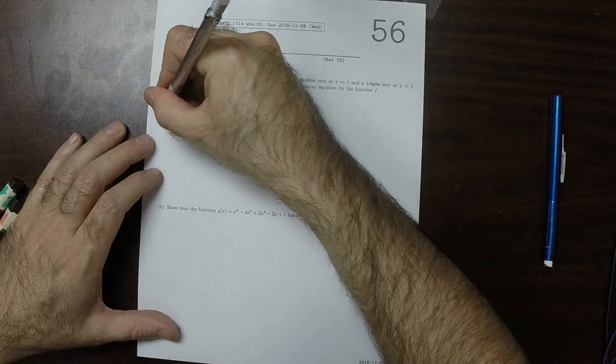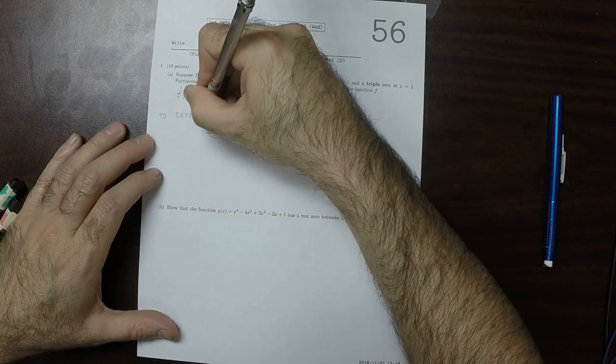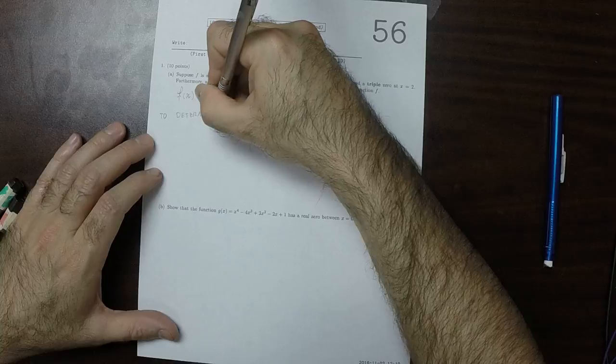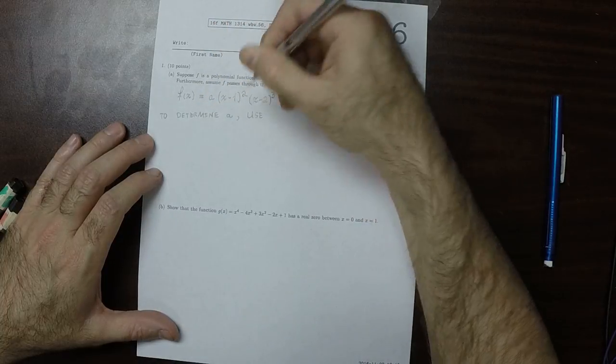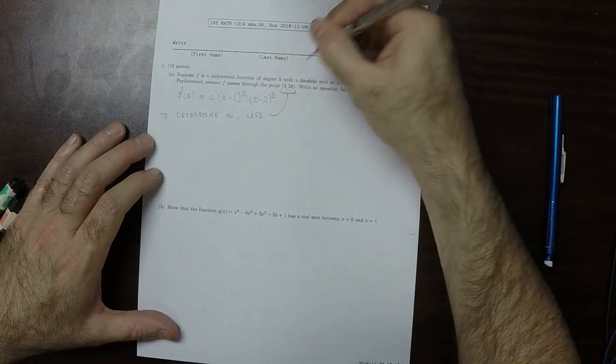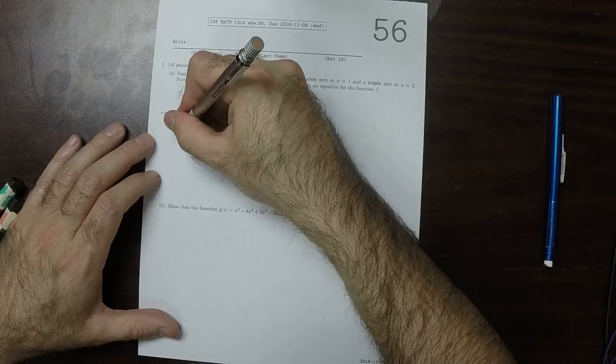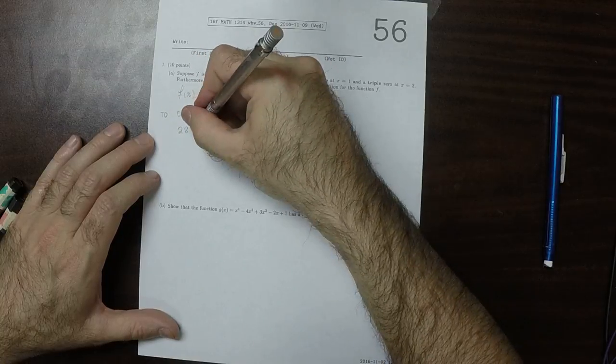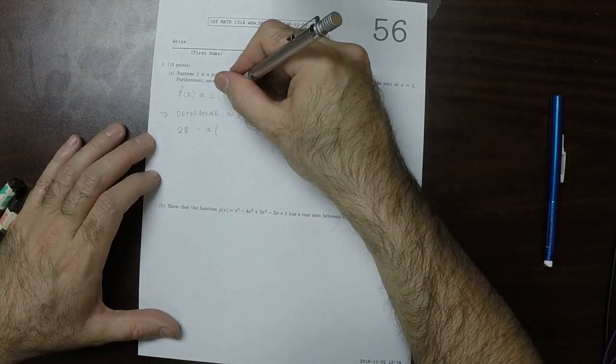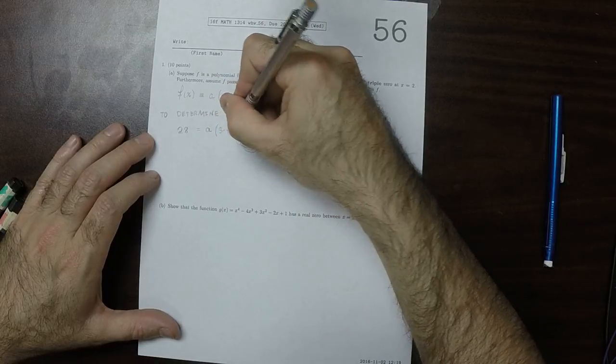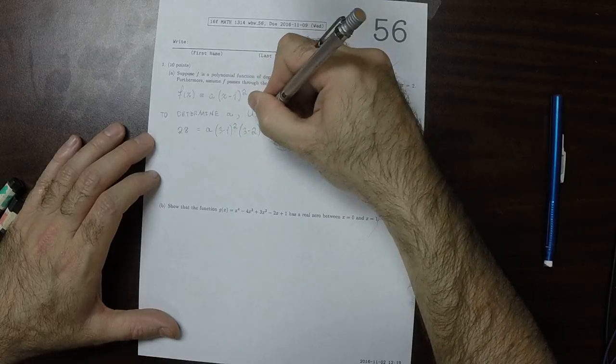Now to determine a, we'll use this information. When we plug in 3, we're supposed to get 28. So 28 is a multiplied by 3 minus 1 squared, multiplied by 3 minus 2 cubed.